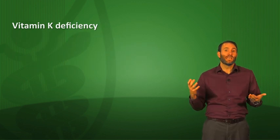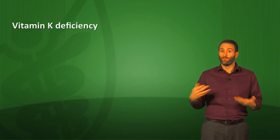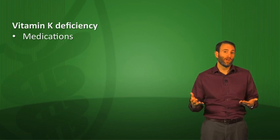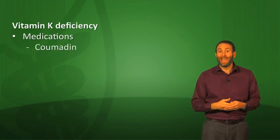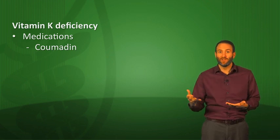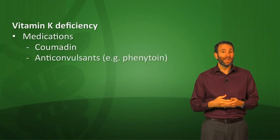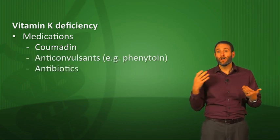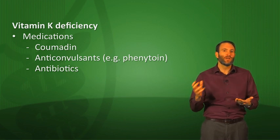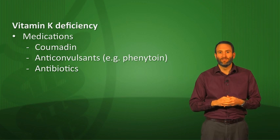What causes vitamin K deficiency? We don't need to eat much vitamin K because our gut flora produces it, so usually it's medications that cause the problem. We've already talked about Coumadin, a vitamin K antagonist used as an anticoagulant — too much leads to excessive anticoagulation. Also think about anticonvulsants like phenytoin, and antibiotics that wipe out gut bacteria, which could theoretically reduce enough of the right gut flora to impair vitamin K synthesis.